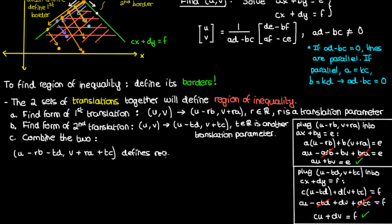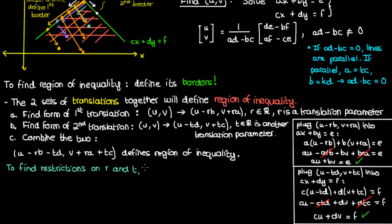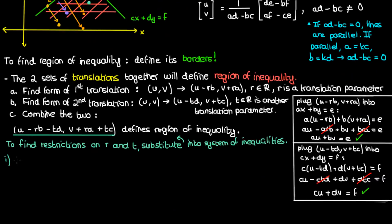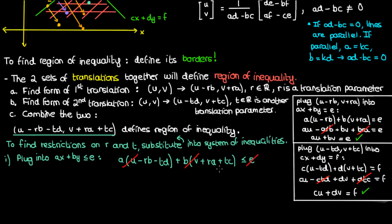This point defines the region of inequality, but we're not quite done yet. R and t are real numbers but they obviously can't occupy the entire space of real numbers, because then our points wouldn't be restricted to this one region — they would be all over the place. That's why we need to find restrictions on r and t. We substitute this point into the system of inequalities. Substitution into the first inequality lets us cancel a·u, b·v, and e, and after canceling those common terms we get t times (ad minus bc) is greater than or equal to zero as the restriction on t.